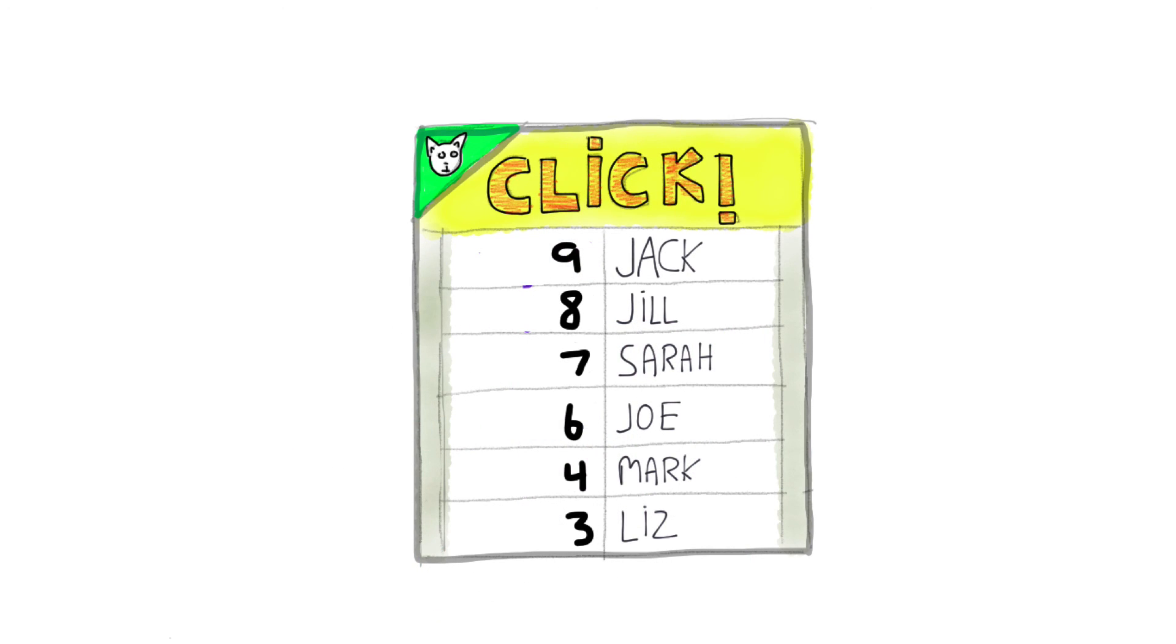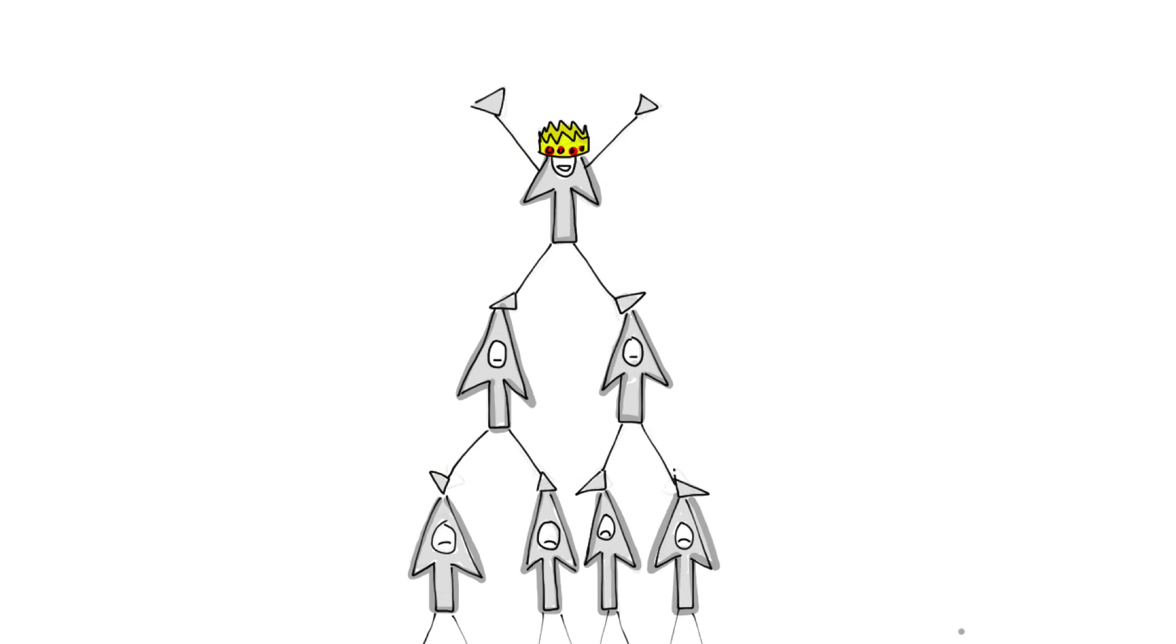So everyone knows exactly where they stand, and justice is done. Or rather, since we're using a left to right binary search tree, justice is done like this. Interesting sense. I'll go over it.